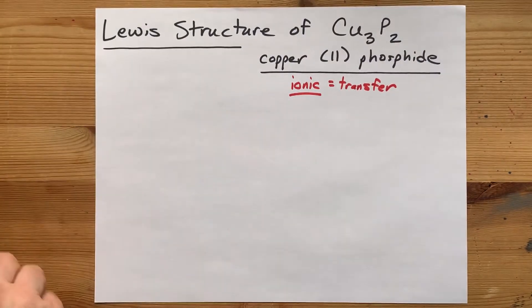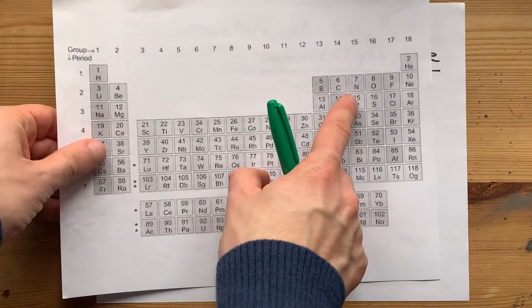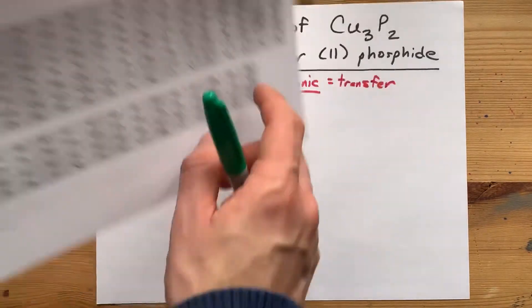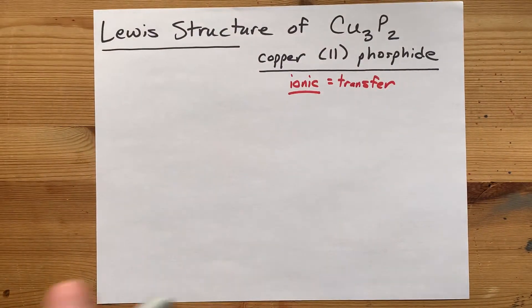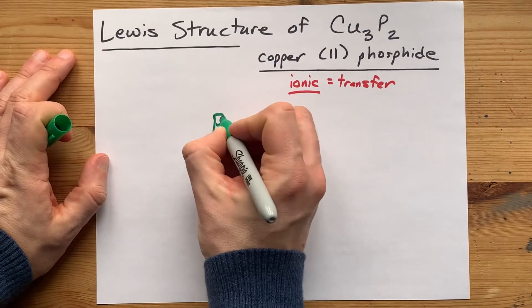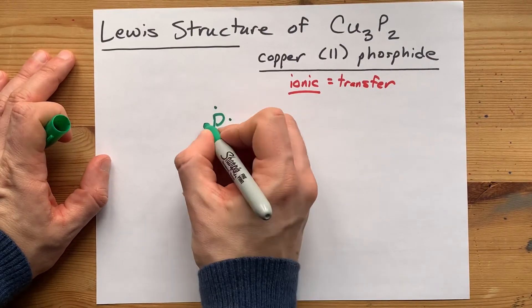Now let's watch that happen. Phosphorus is here in group 15. It's drawn with five valence electrons: P, one, two, three, four, five.